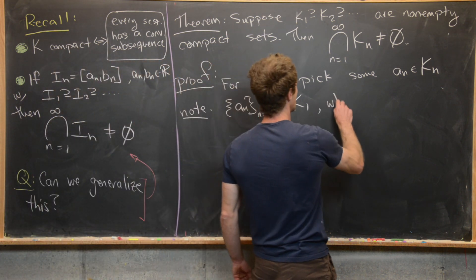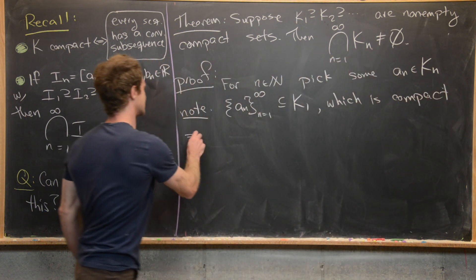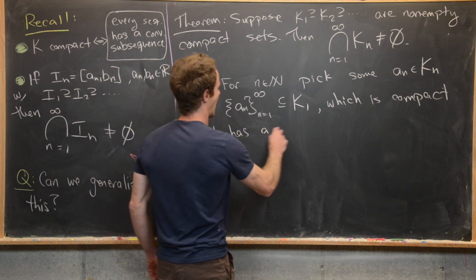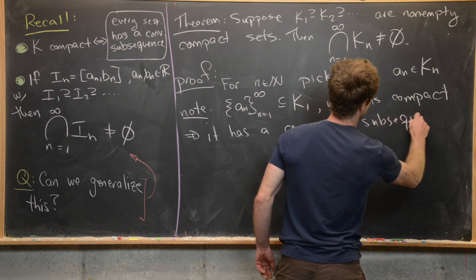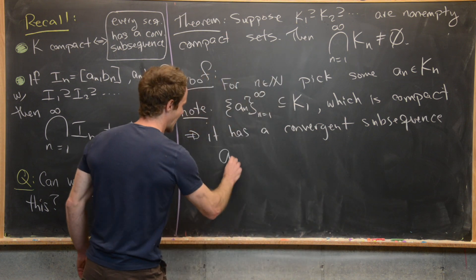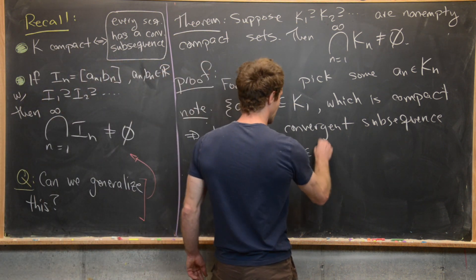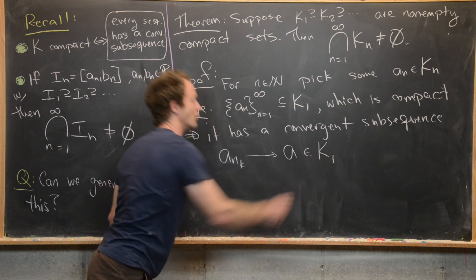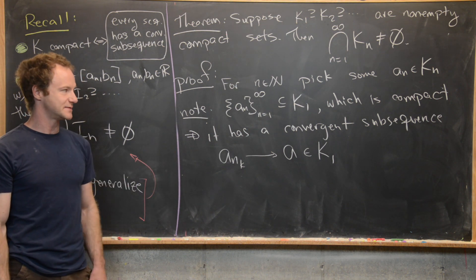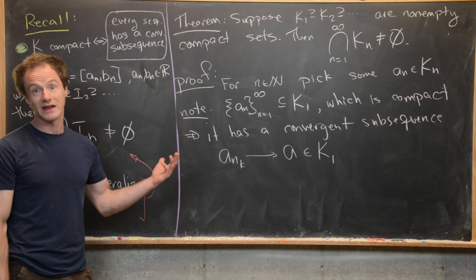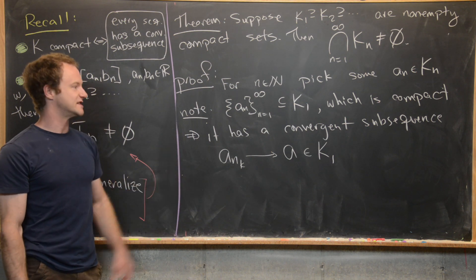Since K_1 is compact, it has a convergent subsequence (a_{n_k}) which converges to some a in K_1. We get the existence of a convergent subsequence from compactness — actually just from the boundedness. And we get that the limit is inside the set from the closedness of K_1.